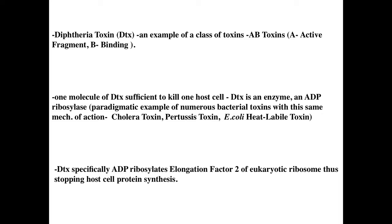The enzymatic activity of DTX is ADP-ribosylase — the ability to take ADP ribose and attach it onto a target. This activity is shared by numerous bacterial toxins; what differs is the target. In the case of cholera toxin, ADP ribosylation locks the regulatory subunit controlling adenyl cyclase in the 'on' position, causing cyclic AMP levels to rise and producing the characteristic diarrhea.